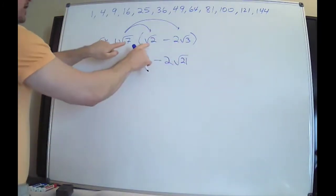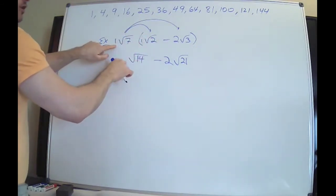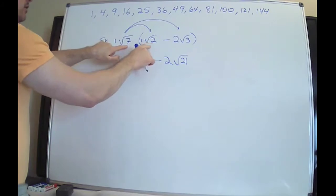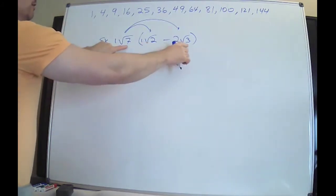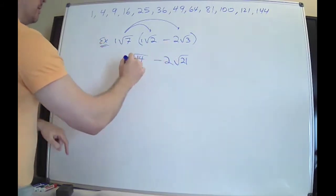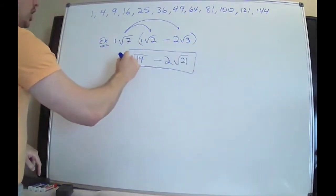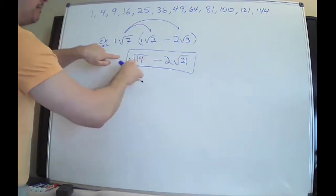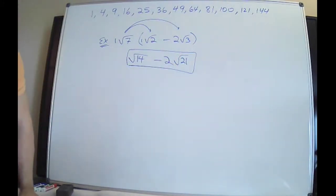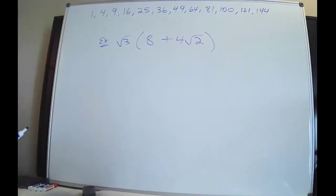Be very careful — there's a one on the outside. One times one is one, so you don't have to write it. Radical seven and radical two make radical 14; radical seven and radical three make radical 21, and the negative two goes along for the ride. These are not like terms — you cannot combine or subtract them. Leave it alone.